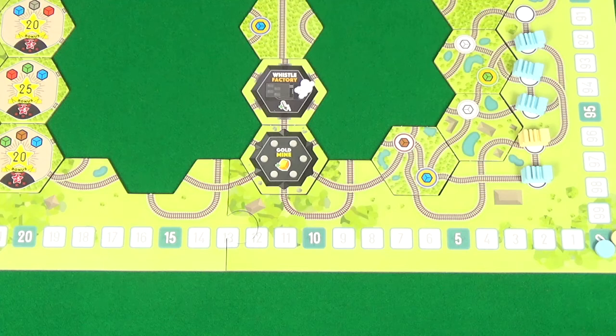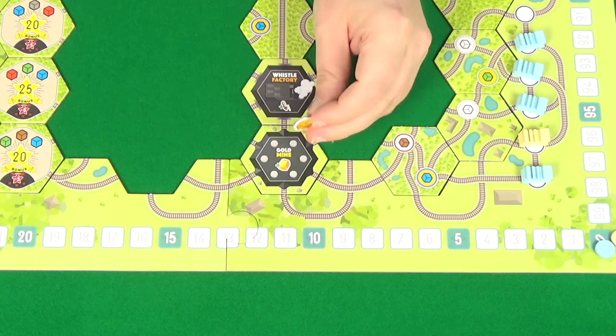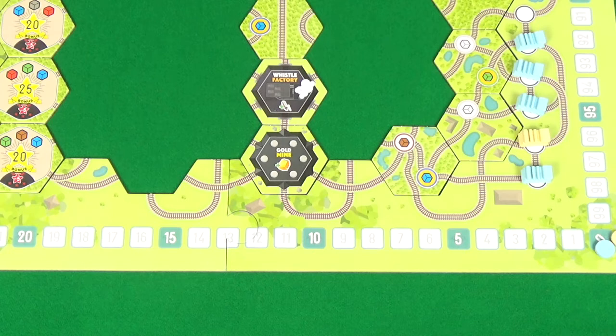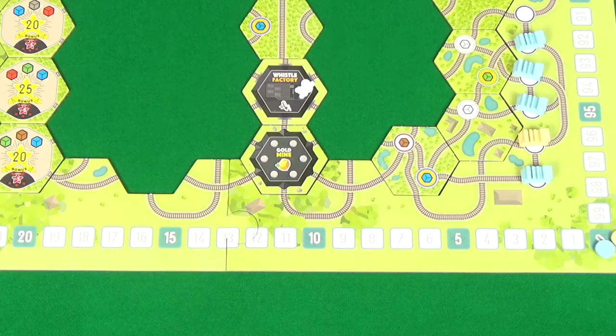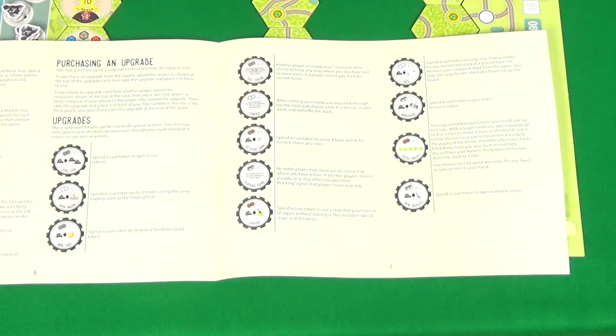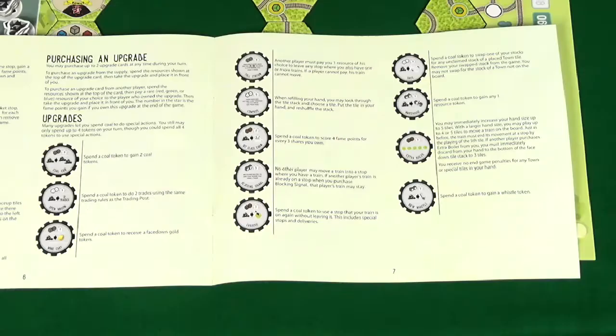Landing on the gold mine, you'll take a random gold token. You'll get to look at this but not show the other players what the score on it is, and this can range from three to five fame. The final tile is the whistle factory. And when you land here, you'll take a whistle token. The final thing to be aware of is what all the upgrades you're playing with that game do, and there are quite a few of these all listed in the manual. So I'll let you find out for yourself what they do.